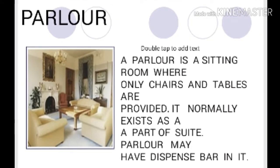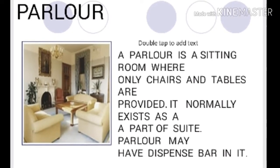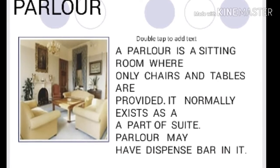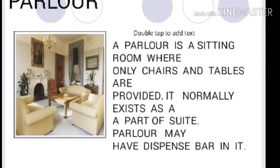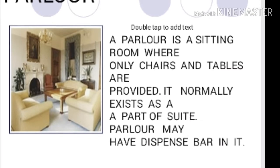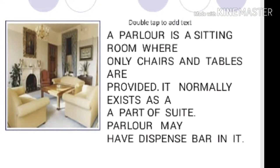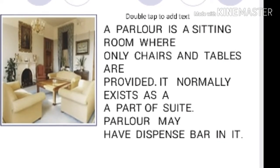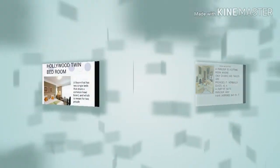Parlor is one type of room — a sitting room where only chairs and tables are provided. It normally extends as part of a suite. The parlor may have a dispense bar in it, providing different types of snacks and alcoholic and non-alcoholic beverages. That room is called a parlor.